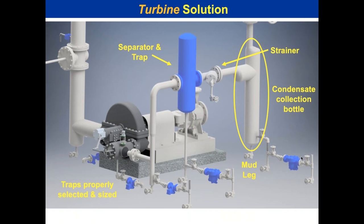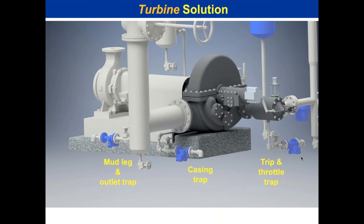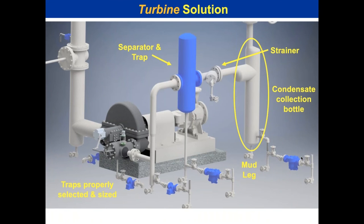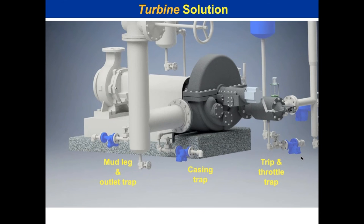For that turbine application in the fog zone, this was the solution we provided — a descriptive solution with detailed drawings. This type of detailed drawing is best for contractors; they can see it in 3D, know exactly how everything must be installed, and it helps mitigate incorrect installation.